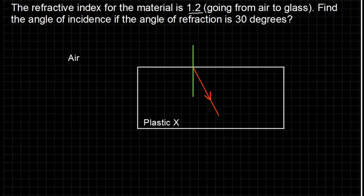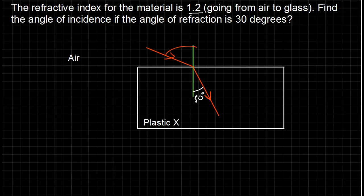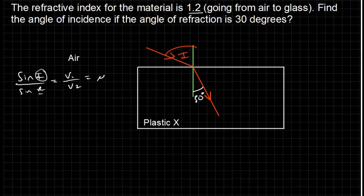Let's try this next question. The refractive index of a material is 1.2 going from air to glass. Find the angle of incidence if the angle of refraction is 30 degrees. Annotating the diagram, I'm adding a ray coming in. If it's coming from the fast medium to the slow medium it will bend towards the normal. Going from air to plastic you'd expect it to slow down. Write out the entire formula — I want sine i over sine 30 equals 1.2.